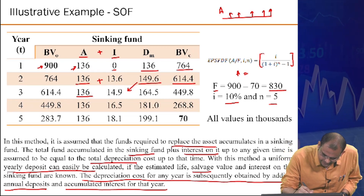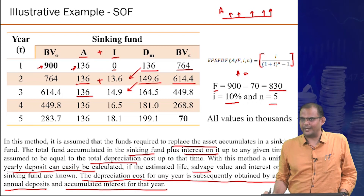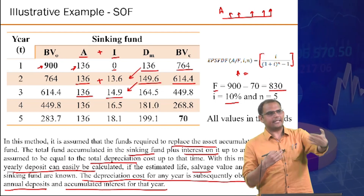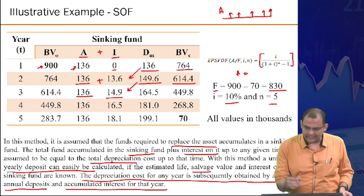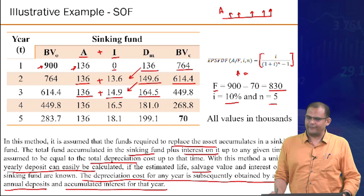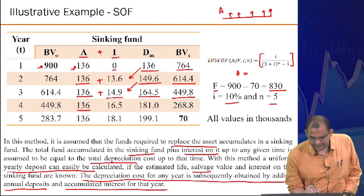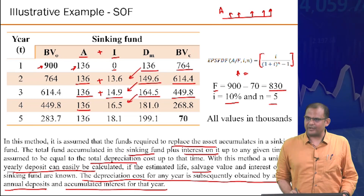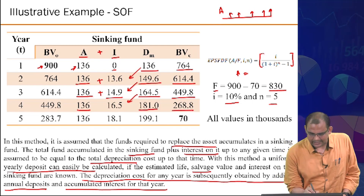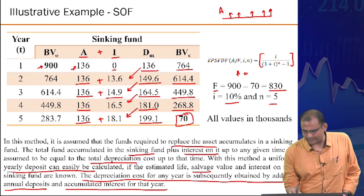Continuing sinking fund: the depreciation in each year increases because the interest accumulated by the sinking fund grows. Year 4: total depreciation ≈ 164.5, book value ≈ 449.8. Year 5: A = 136, interest ≈ 18.1, total ≈ 154.1. Final book value approaches 70 (salvage value).